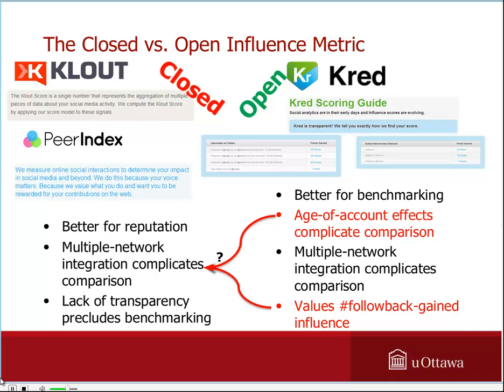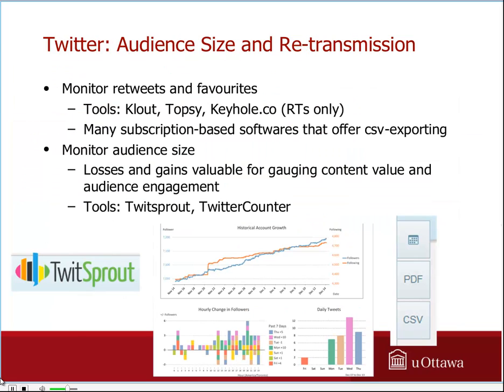You get a point every time on Twitter, for instance, that you follow someone — an outreach point — and you get one influence point any time someone follows you back. So they've got two separate point contributors for their system. But neither is an ideal solution at the end of the day. I think competition in this area is going to facilitate more accessible data and more transparent influence metrics, but we're not there yet. Using these as your benchmarking tools is not a good strategy in the long run, at least not yet.